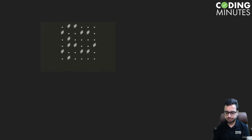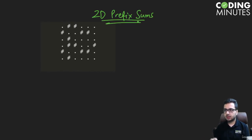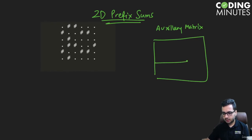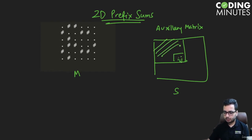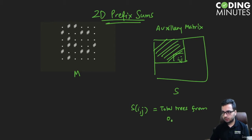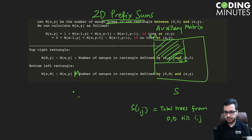The idea is to use the concept of 2D prefix sums. We are going to make an auxiliary matrix. In this matrix, at a particular point i, j — let's call the original matrix A and the auxiliary matrix M — S[i][j] will store the total number of trees present in the sub-matrix starting from (0,0) to (i,j), i.e., the total trees in that sub-rectangle.